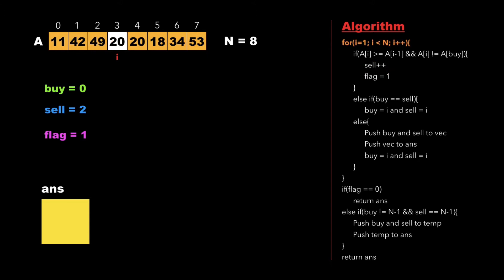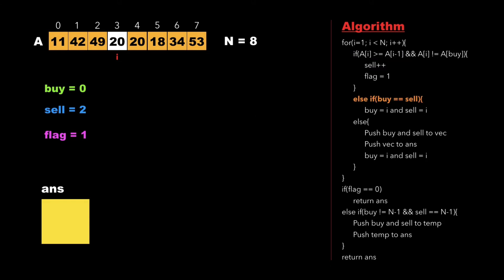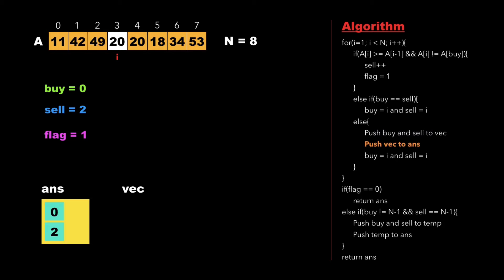Now i points to 20 at memory location 3, where we check whether 20 is greater than or equal to 49. Since 20 is not greater than 49, we check another condition: if buy is equal to sell. Since buy and sell are both different values, we go to the else part where we create a vector VEC, push the values buy and sell into it, push this vector into the answer vector, and then update the values of buy and sell to i, then increment i.